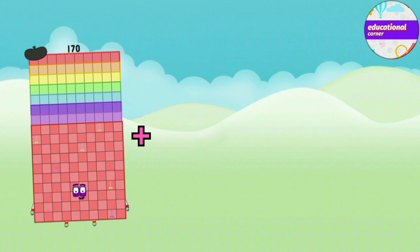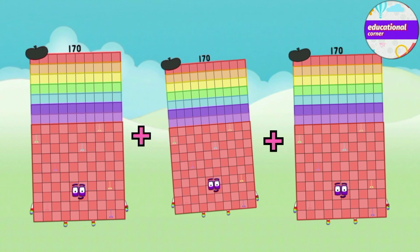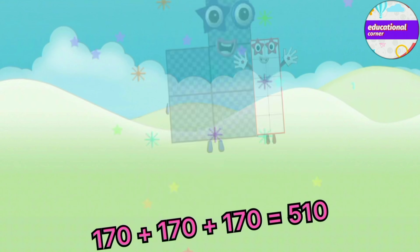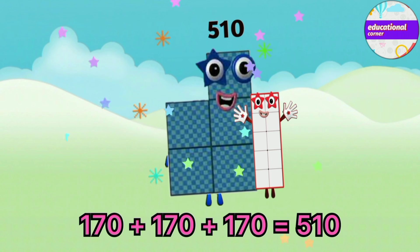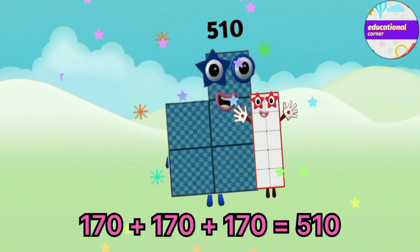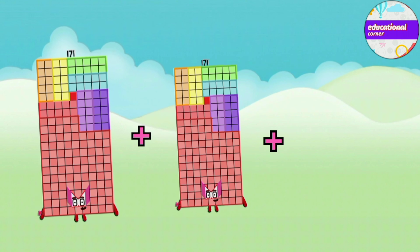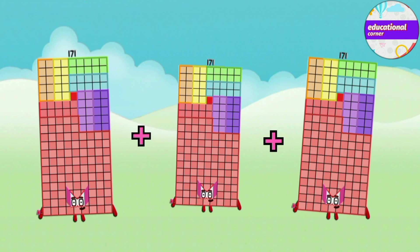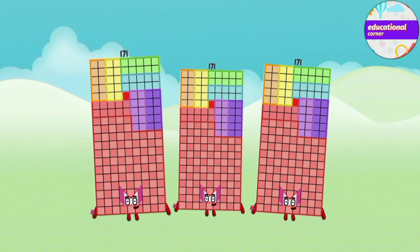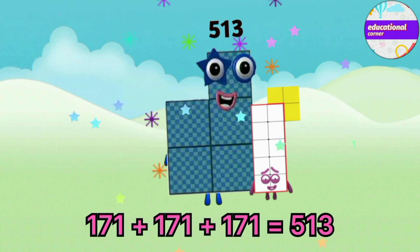170 plus 170 plus 170 equals 510. 171 plus 171 plus 171 equals 513.